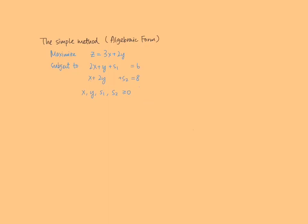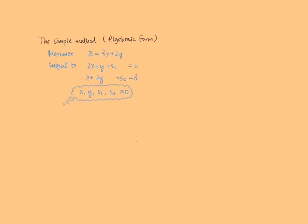We shall solve this by the simplest method. Its idea is to first find a vertex in the feasible region as a starting point. We treat the equations representing the objective function and the constraints as a system of linear equations. We rewrite the objective function so that all variables are moved to the left-hand side. We see that this system of linear equations has 5 unknowns and 3 equations.